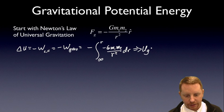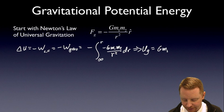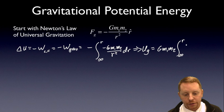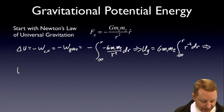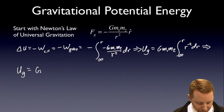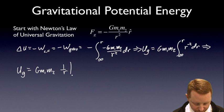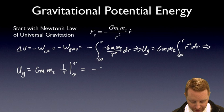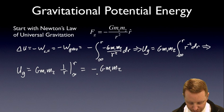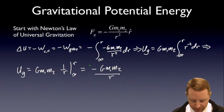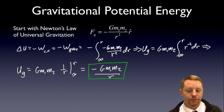Therefore, the gravitational potential energy equals G, M1, and M2 — all constants pulled out of the integral — times the integral from infinity to r of dr over r squared, written as r to the negative second for easier integration. The integral of r to the negative second is 1 over r, evaluated from infinity to r, which gives us minus GM1M2 over r. There's our potential energy function due to a non-uniform gravitational field, derived directly from our definition of work and conservative forces.